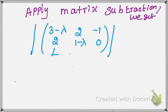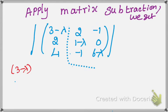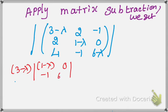Now compute the determinant. Expand along the first row. First element is (3-λ): delete its row and column, leaving the 2×2 submatrix [(1-λ), 0; -1, (6-λ)]. The sign pattern is +, -, + for the first row.